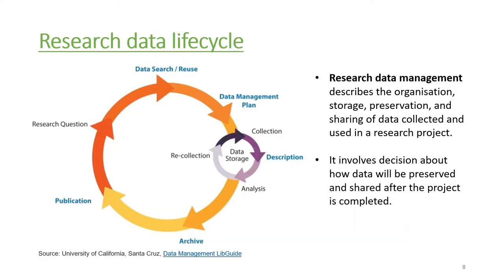Research data management describes the organization, storage, preservation, and sharing of data collected and used in a research project. It involves decisions about how data will be preserved and shared after the project is completed. This figure from the data management guide for librarians from the University of California is one I've seen used in many other documents. Where do you think, as a researcher, you should start in this cycle?